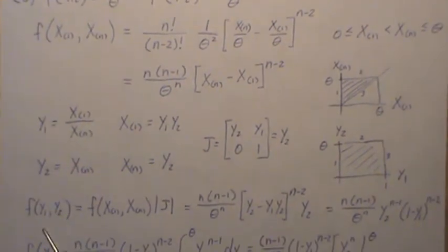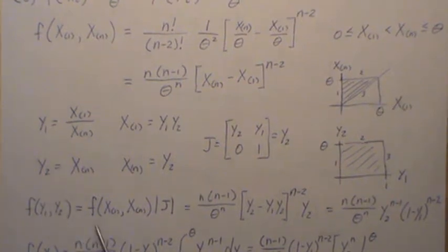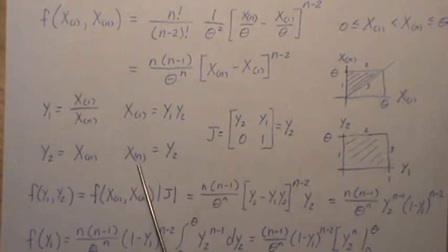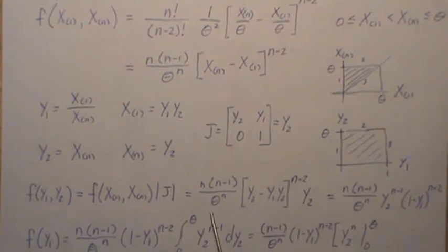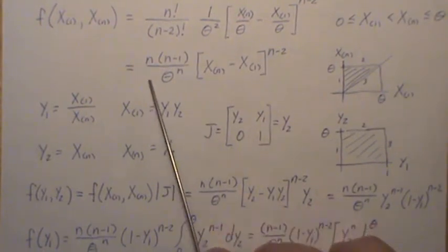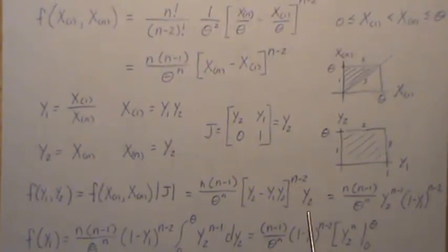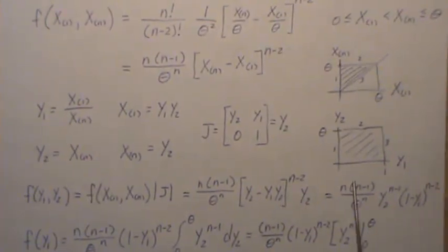So then to find the joint distribution of Y1 and Y2, you plug in what you solve for X1 and Xn here times the absolute value of the Jacobian. So since this was the joint density, we plug them in here. And that's the Jacobian. And it simplifies to this quantity here.